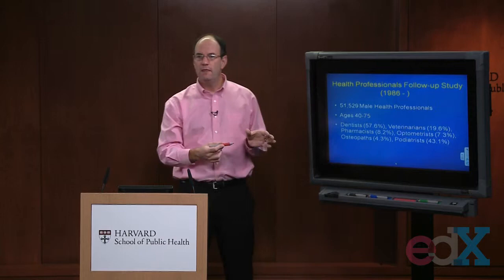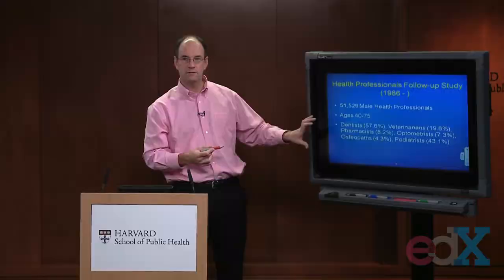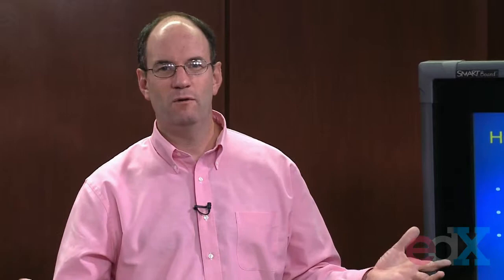Like the Nurses' Health Study, we went to male health professionals. There weren't enough male nurses to make a large enough cohort, so we thought about which professions would have people keen to participate and keep response rates up over time. We went to the American Dental Association and similar organizations, got their mailing lists, and sent mailings to every dentist in the United States between ages 40 and 75. Our dream was 50% response, but in the U.S. that's a challenge — we actually got about 25 to 30% response after two or three mailings to recruit 51,529 men.